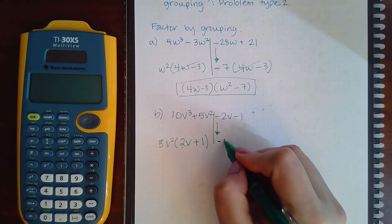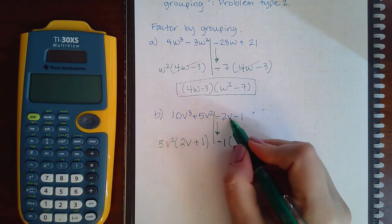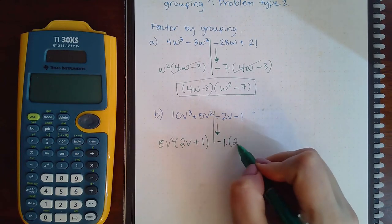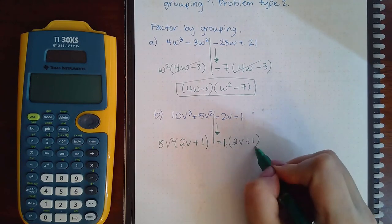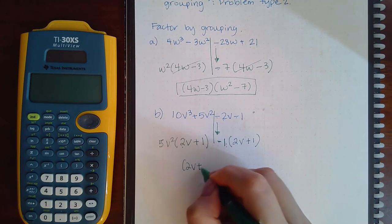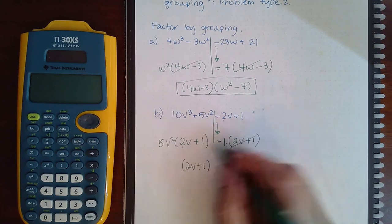So they have this 2v plus 1 in common, and if I take those out I'm left with 5v squared minus 1. And so that is the factorization.